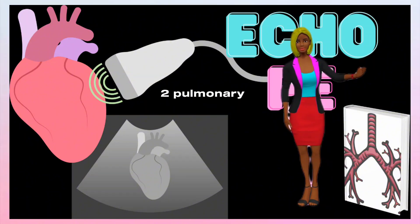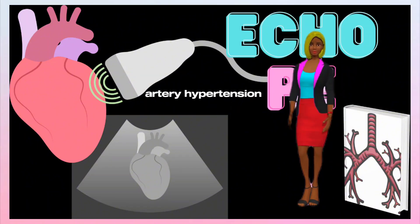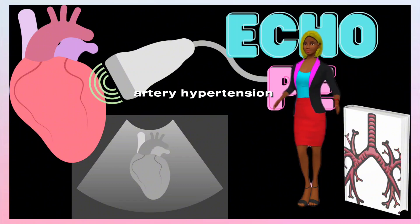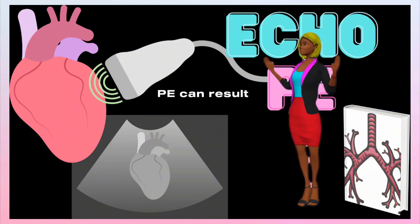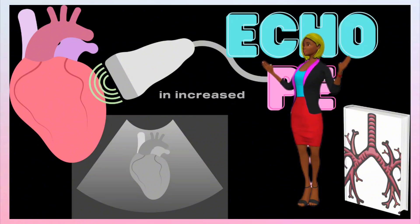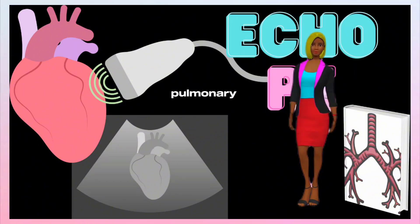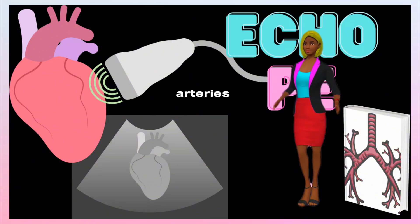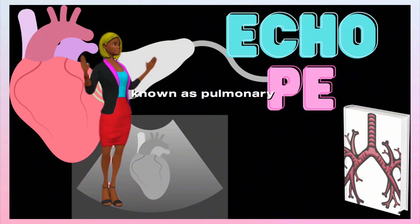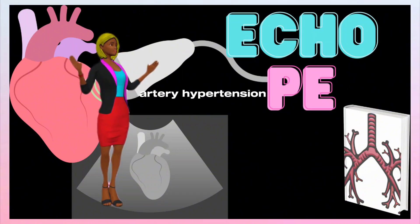2. Pulmonary Artery Hypertension. PE can result in increased pressure in the pulmonary arteries, known as pulmonary artery hypertension.